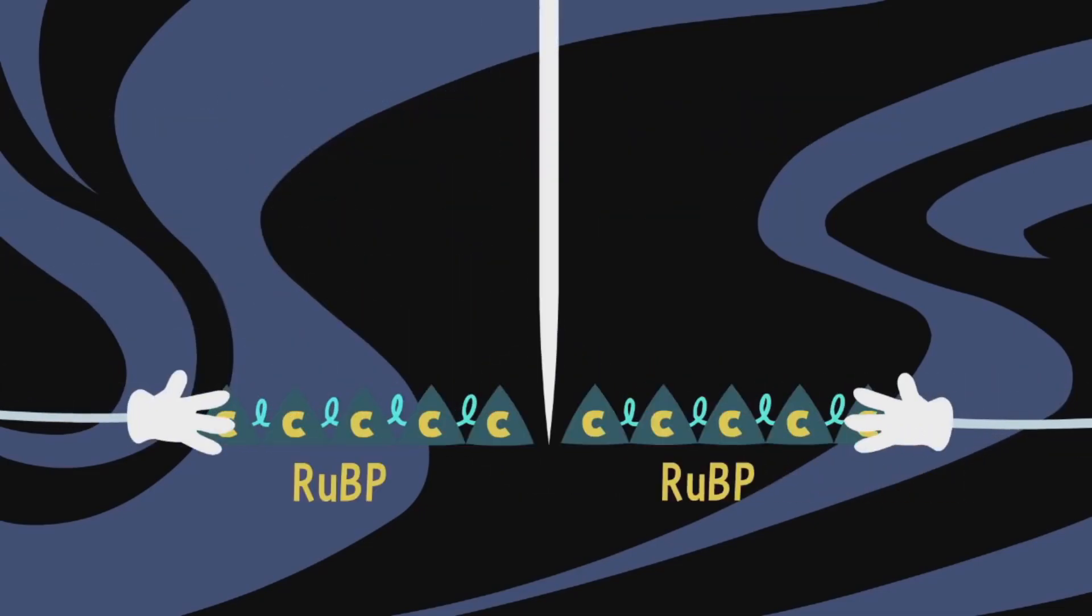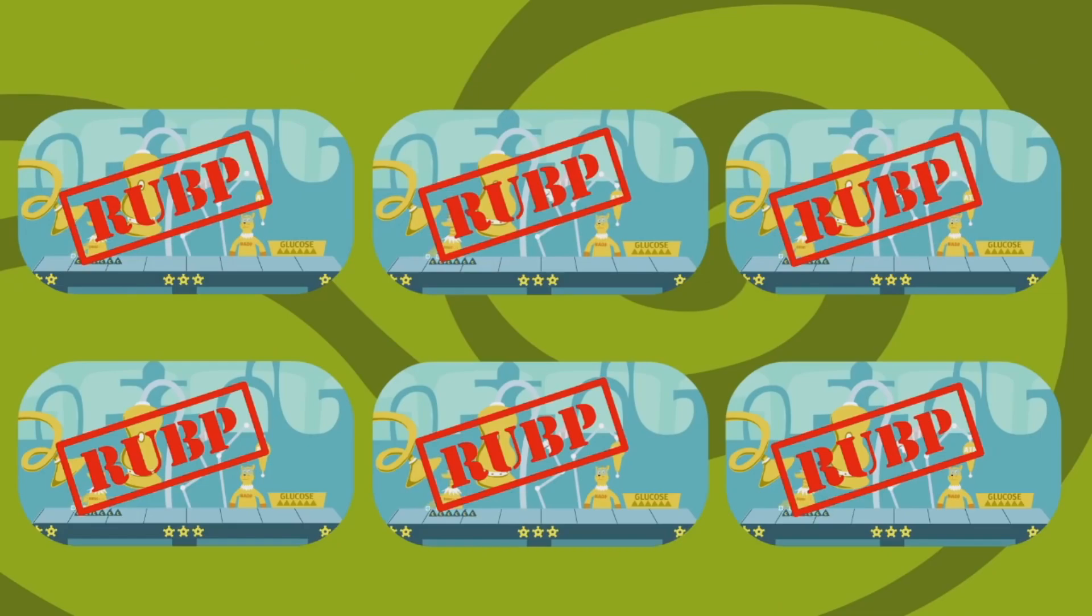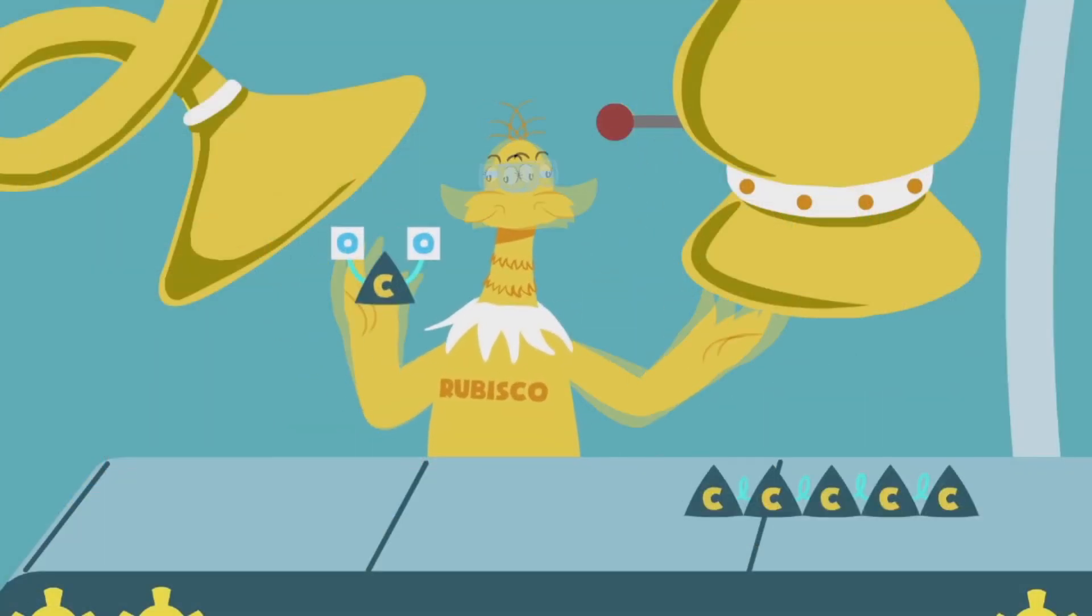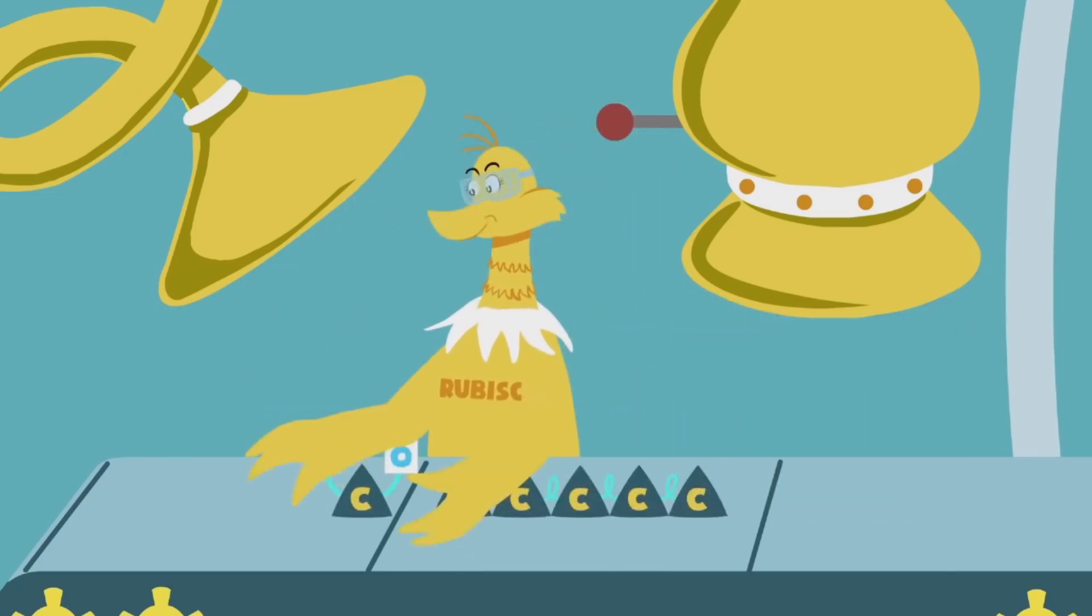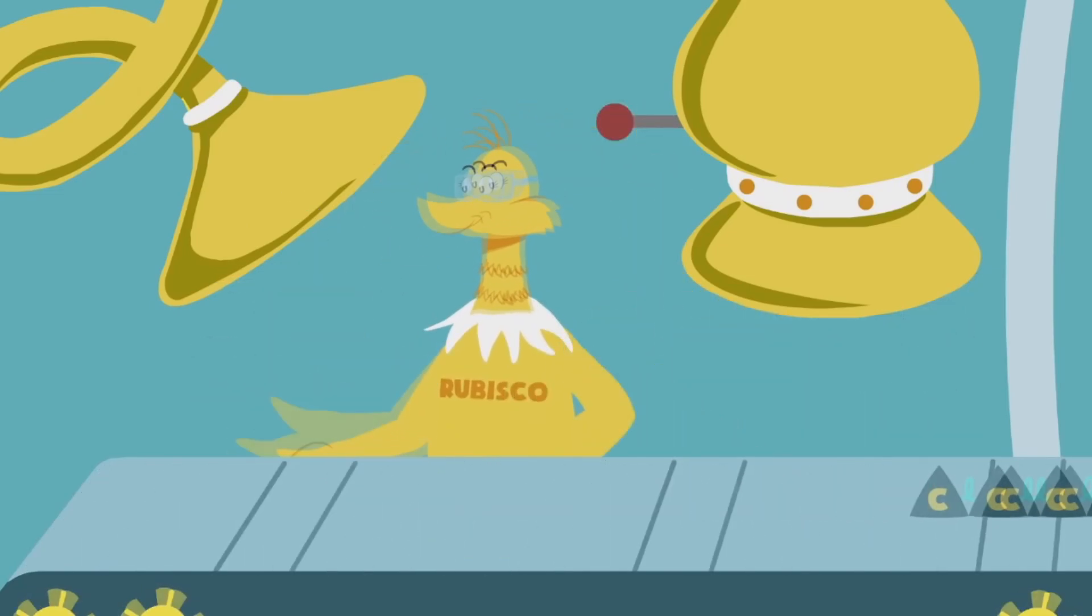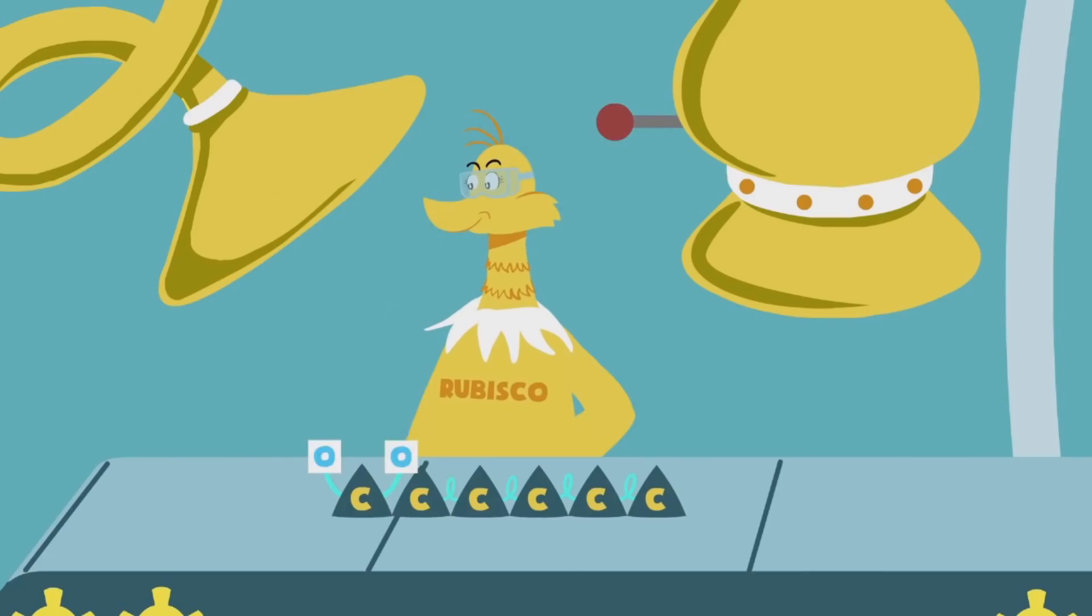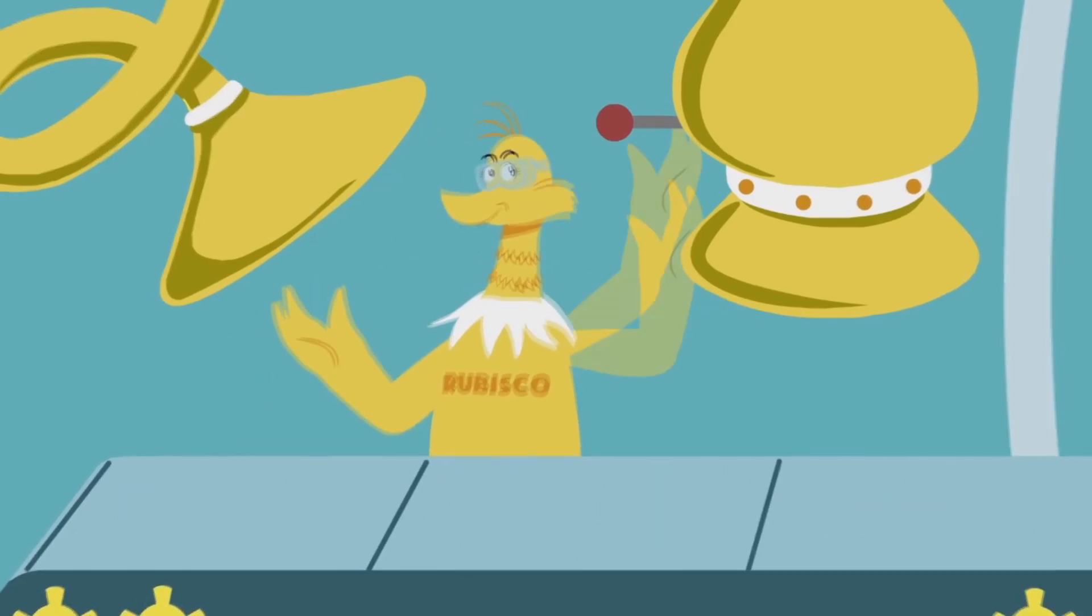With three full RuBPs recreated from five of the 10 G3Ps, simply duplicating this process will renew the six RuBP chains needed to restart the cycle again. So the Calvin cycle generates the precise number of elements and processes required to keep this biochemical production line turning endlessly. And it's just one of the hundreds of cycles present in nature.